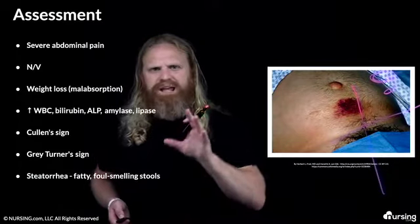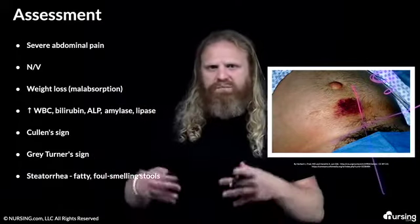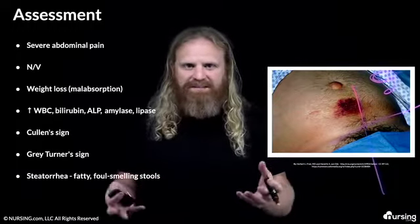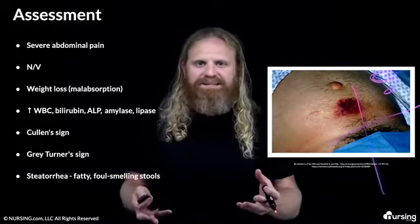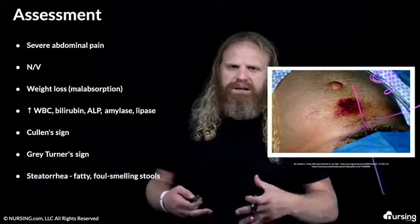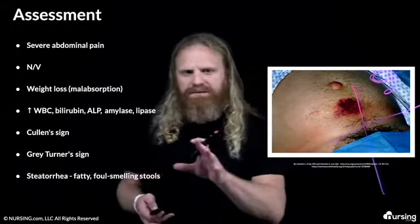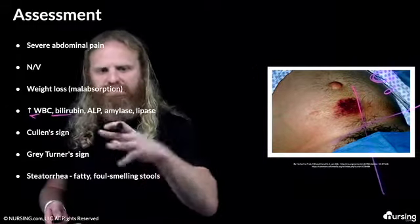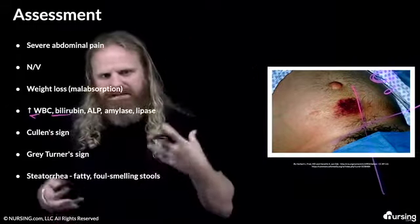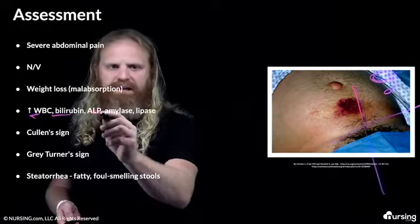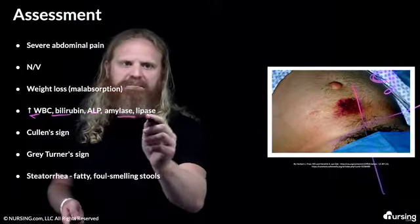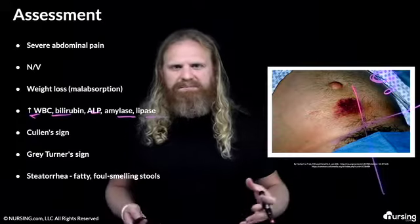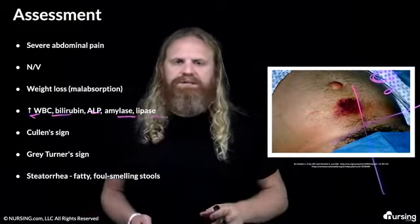Patients are also going to have nausea and vomiting, and weight loss — they aren't able to digest and absorb nutrients, so of course they're going to have weight loss. Other things you might see are elevated white blood cell count, elevated bilirubin — remember how it's connecting to the gallbladder — elevated ALP, amylase, and lipase. The body's not able to use these enzymes, so they're going to start to increase.